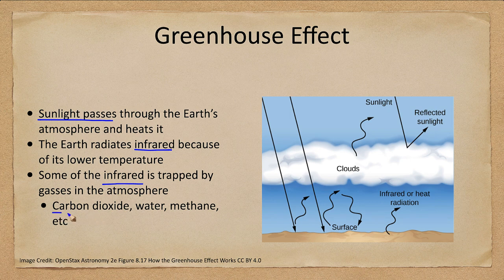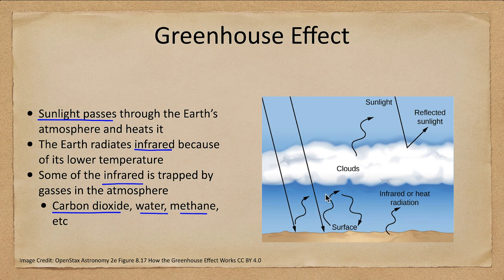Since the Earth is cool, it emits infrared, and some of this infrared is then trapped by gases in the atmosphere — carbon dioxide, water vapor, methane, and others. Sunlight comes in, some even gets through clouds, and the surface re-radiates that energy, which traps heat. Some sunlight is reflected away depending on the amount of cloud cover.